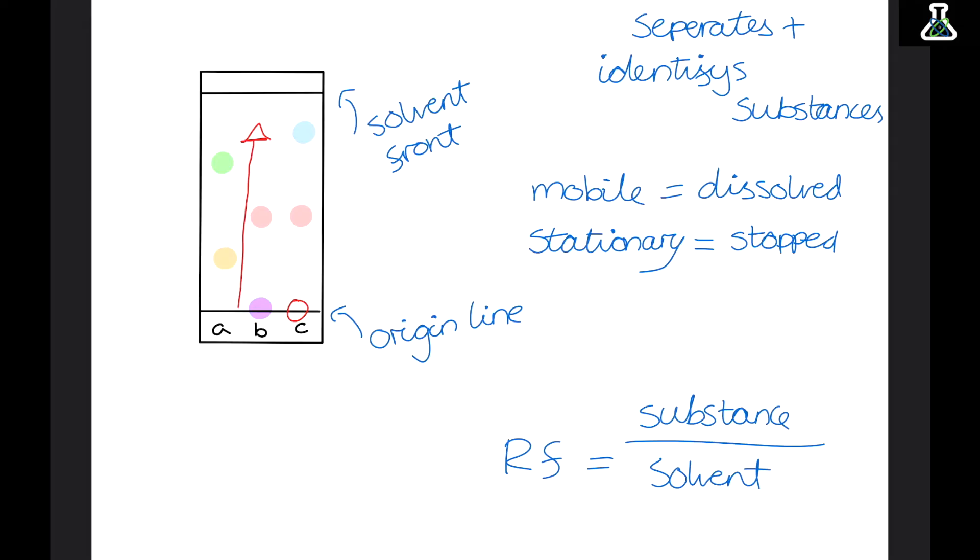So we've spoken about separating the substances. They've separated out as they dissolved. But I also said we can use them to identify substances. If we put a few different mixtures on the origin line to separate them out we can see if any of the mixtures in them move to the same place. Just like these two red spots. Because they're next to each other it means they're the exact same substance.